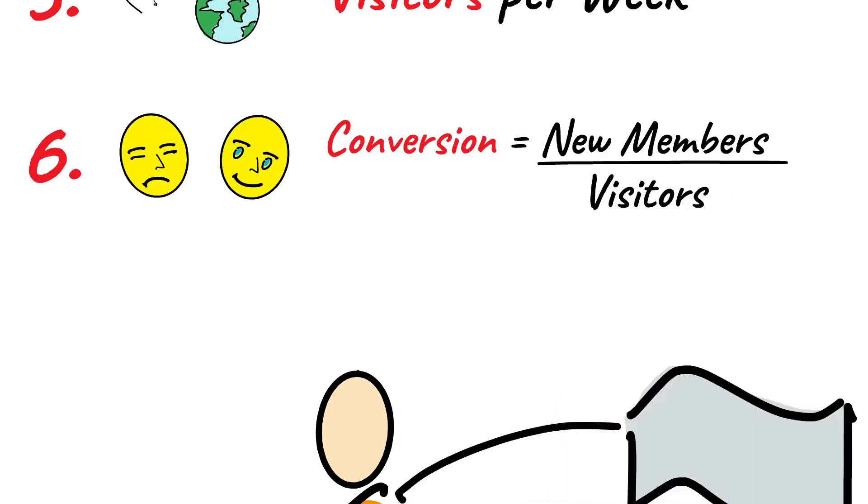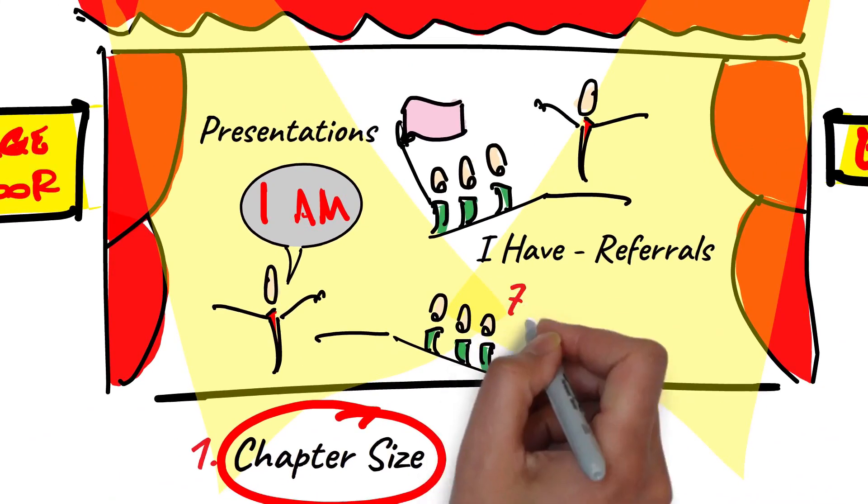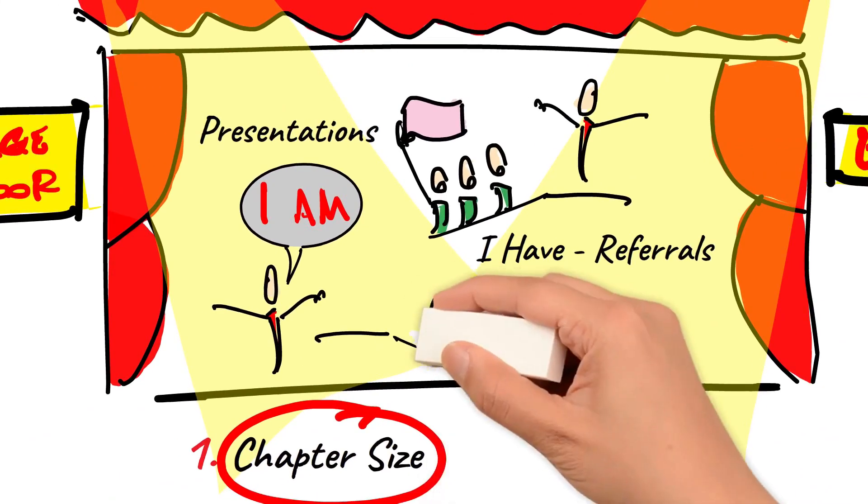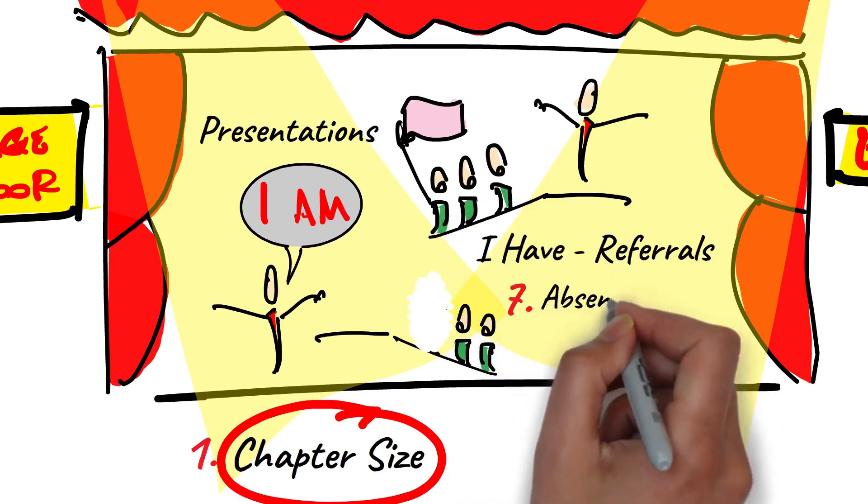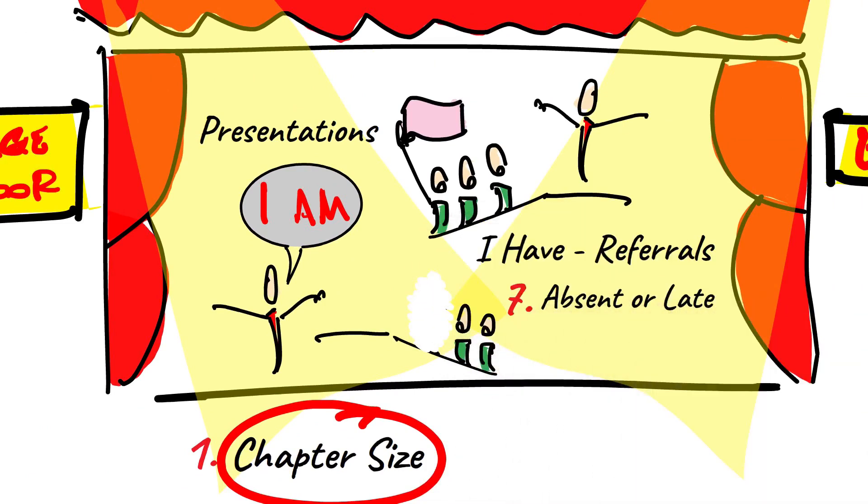And finally, Meeting Attendance: This is expressed as a percentage absenteeism or lateness of members compared to the total number of member meetings available in the period.